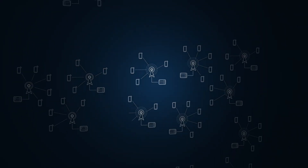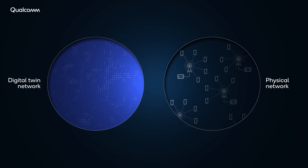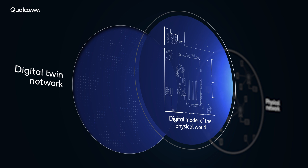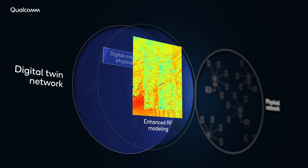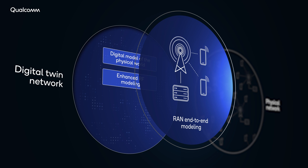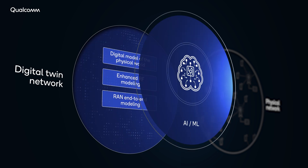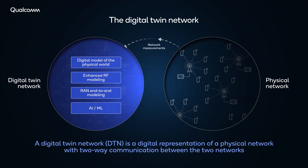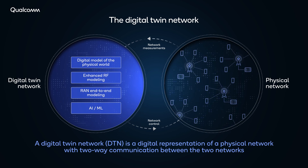The digital twin network which we discuss today is to use digital twin to create a digital network to mimic the physical network. With this, you can do lots of analytics on the network operation, including coverage planning, capacity planning, and also help the network operation by itself. The overall concept is to reduce the network cost and also make it easier to deploy and manage.